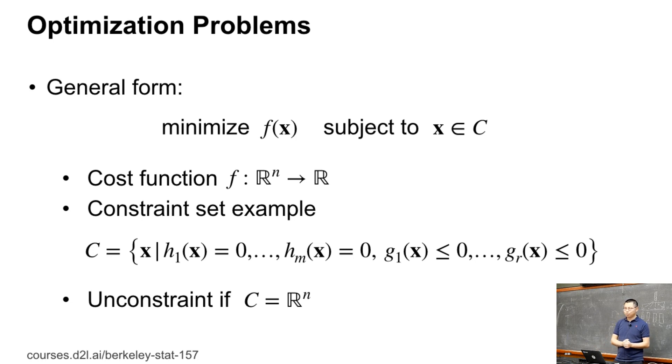The constraint set C: we have multiple choices. For example, we can pick a bunch of h_i such that we only want x where h_i equals zero. Also, we can pick a bunch of g_i such that we only want all g_i(x) less than or equal to zero. We call it unconstrained if C is just the whole space. For deep learning, we mostly talk about unconstrained problems, but an unconstrained problem adding regularization can turn into a constrained problem.